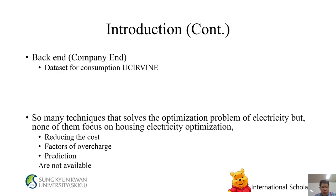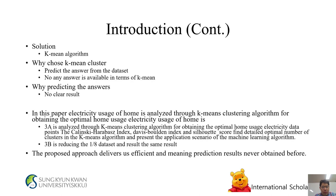Data comes from consumption data from UC Irvine. The main techniques that solve the optimization problem of electricity, but none of them focus on housing electric optimization. Challenges include reducing the cost, factors of overcharge, and prediction are not available. The proposed solution is the K-means algorithm.